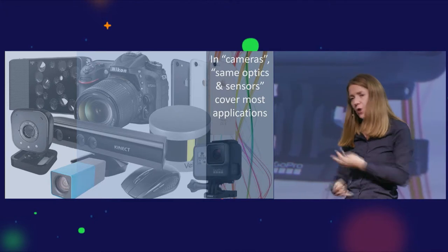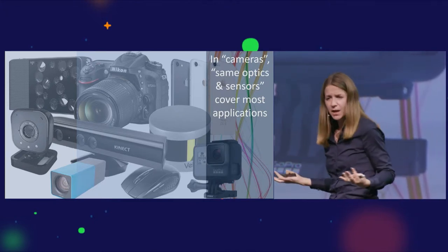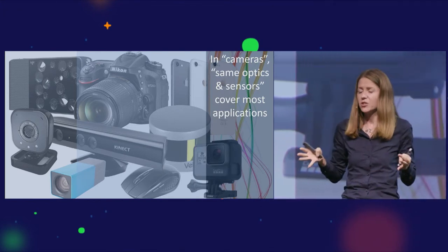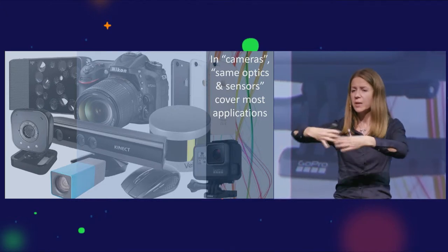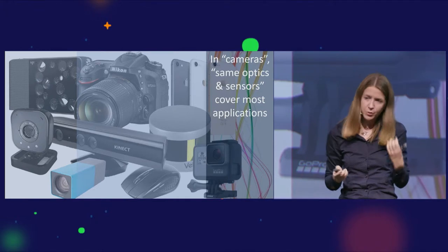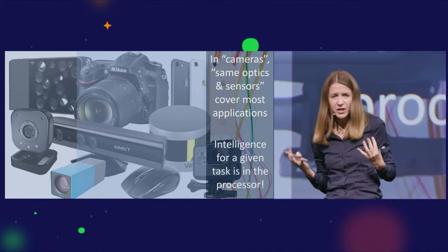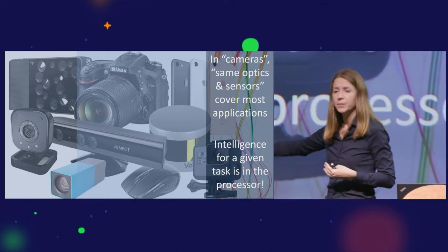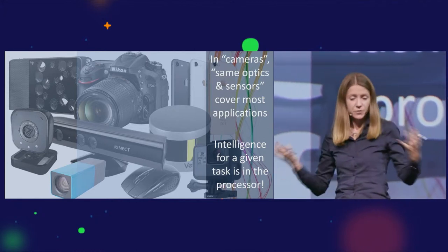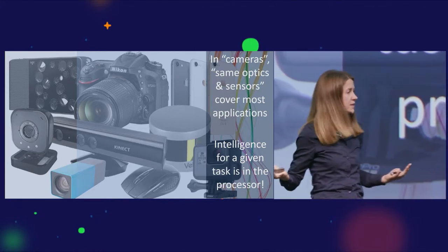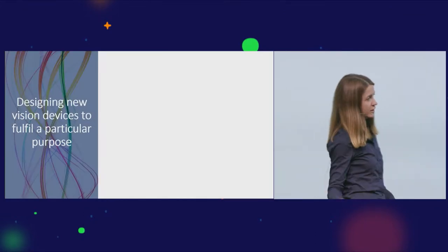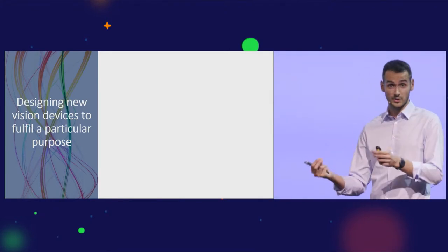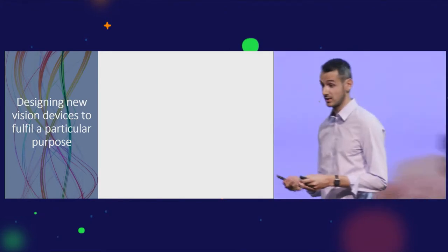If you look into our technology, however, it seems that the cameras we use for all these different purposes are basically the same. They use more or less the same optics with maybe a little zoom, and the same CMOS sensor that accumulates light in short time intervals to produce images. The whole burden of extracting useful information for a particular task is offloaded on the processor. Our question is, is this the only way to go and is it the best one? Can we design new vision devices to fulfill a particular purpose?